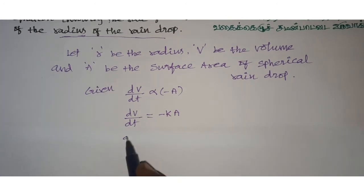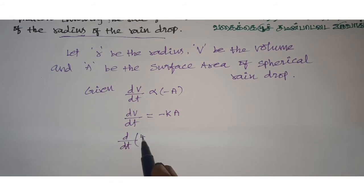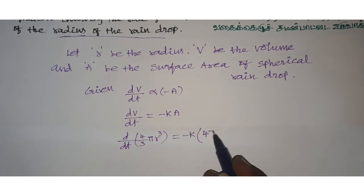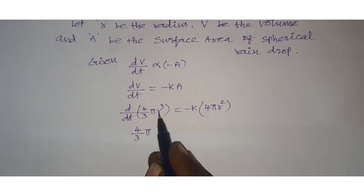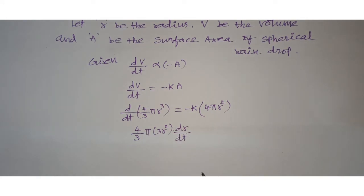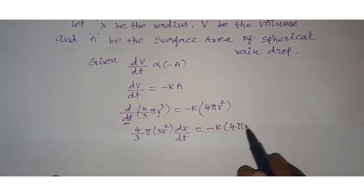So, volume of sphere: d/dt of (4/3)πr³ equals minus k times surface area 4πr². Differentiating: (4/3)π times d/dt(r³) equals (4/3)π times 3r² times dr/dt. This equals minus k times 4πr².